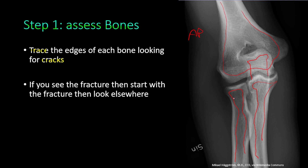We pay more attention when checking the radial head and neck because those are a common area of fractures. We also check the areas of superimposition — that is, the area of the joint — as it is easy to miss a subtle fracture there. If you see a fracture first, assess it and then look elsewhere on the x-ray.